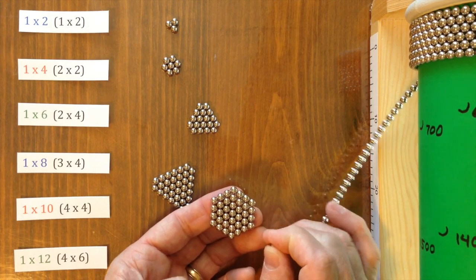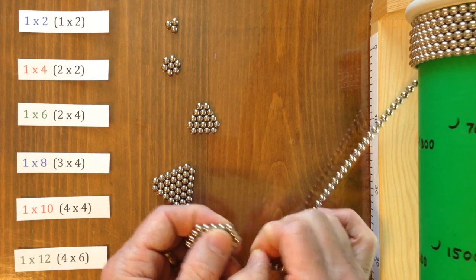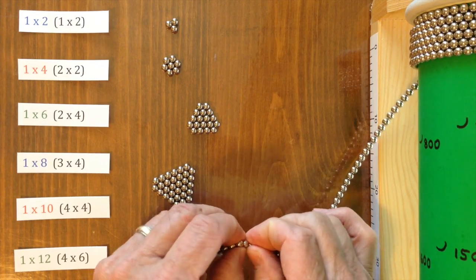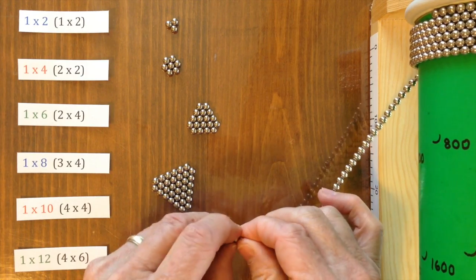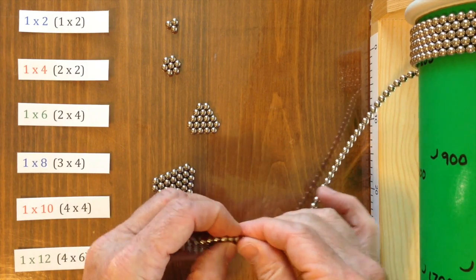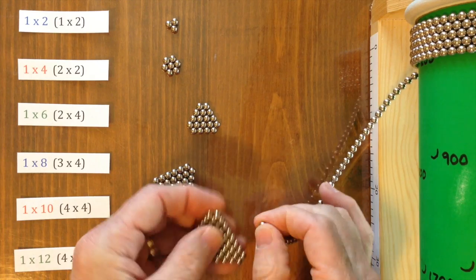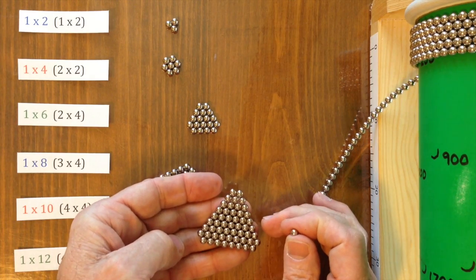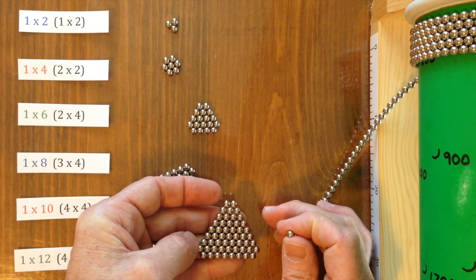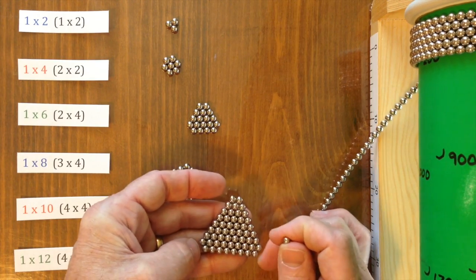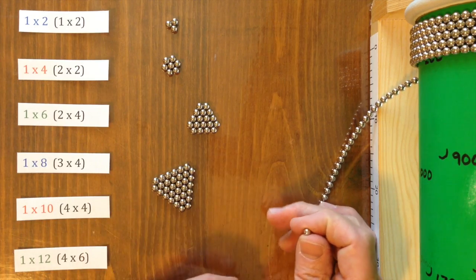And a second layer to make a 4 by 4. And we're going to build this out to make a 1 by 10. And what we now have is a 2 by 8. And when we add magnets on each of the three corners, it'll become a 1 by 10.